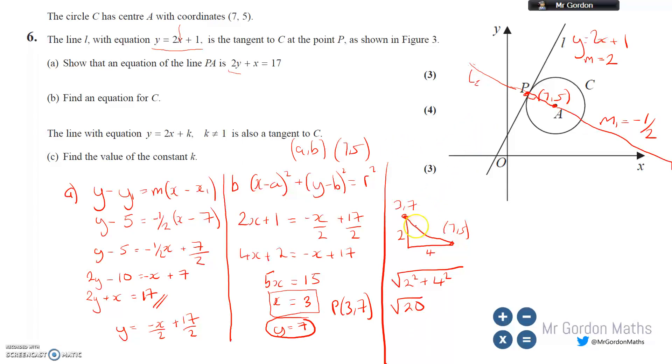The radius is √20. That leads into our formula. The equation of C is (x-7)²+(y-5)²=r². The radius is √20. If I square √20, that's just 20. So that is the answer to part B: (x-7)²+(y-5)²=20.